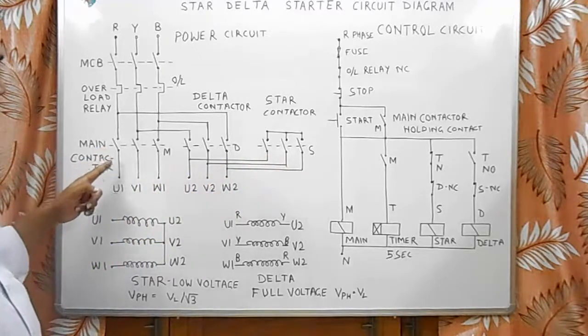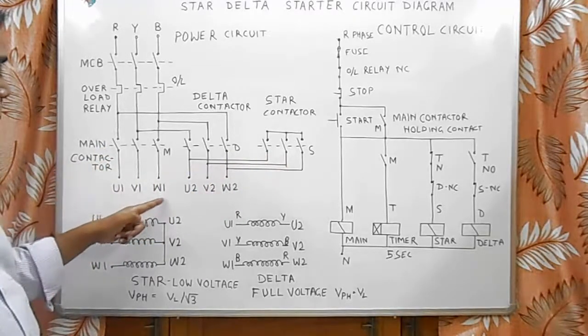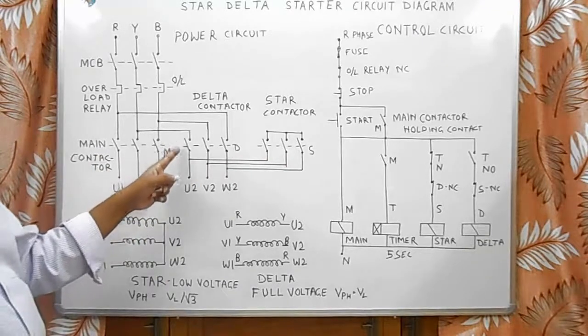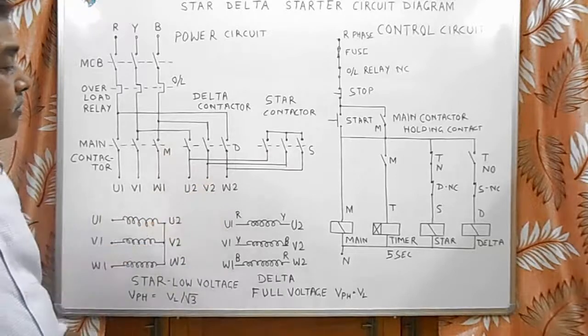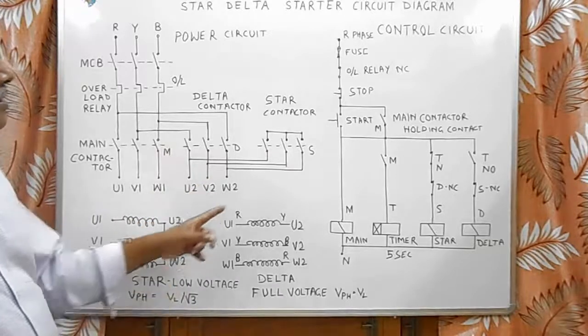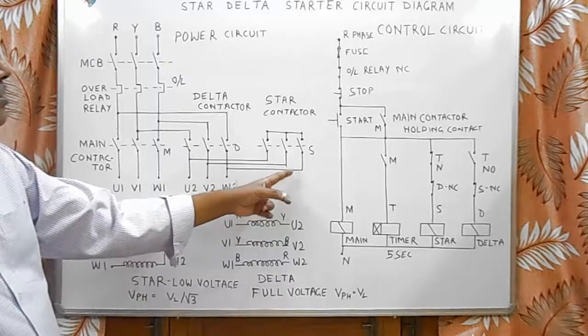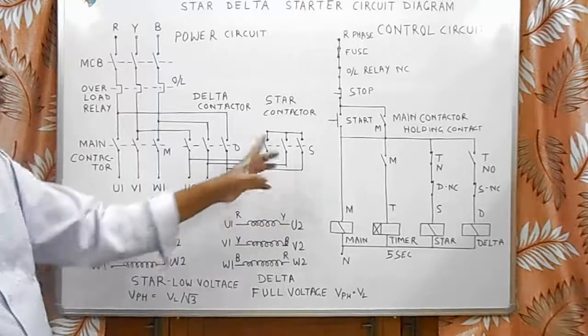The main contactor gives supply to U1, V1, and W1. Delta contactor gives supply to U2, V2, and W2. Whereas the star contactor is used to make short circuit of U2, V2, and W2.